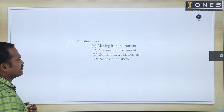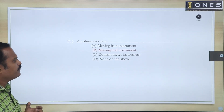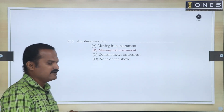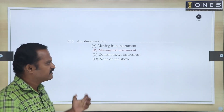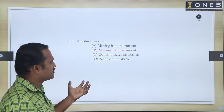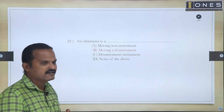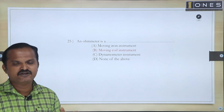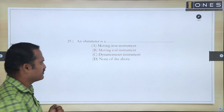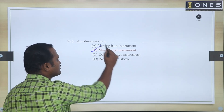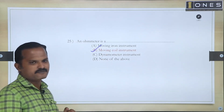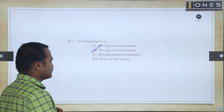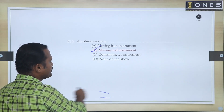Next question: An ohmmeter. We discussed this theory. It is a moving coil type instrument. The ohmmeter is a moving coil type of instrument.